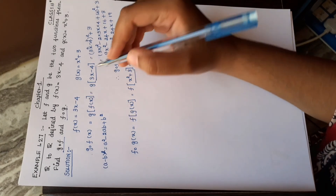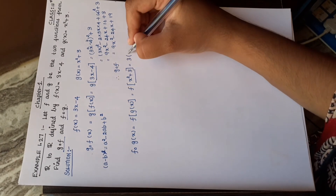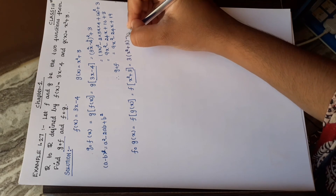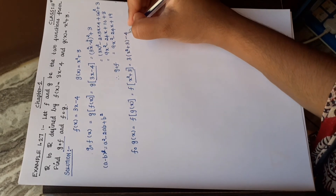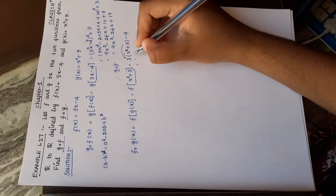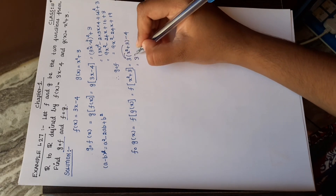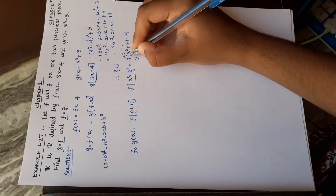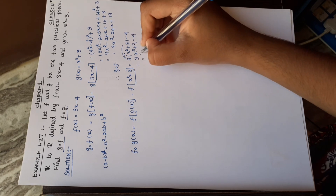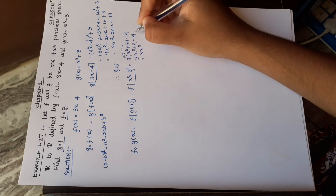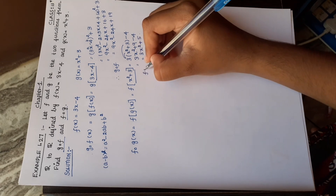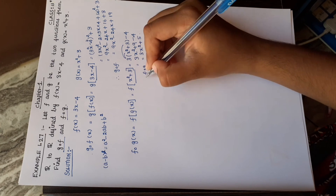So f(g(x)) = 3(x² + 3) - 4 = 3x² + 9 - 4 = 3x² + 5. This is f of g.